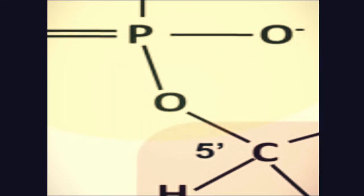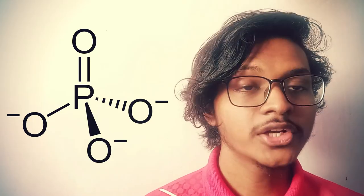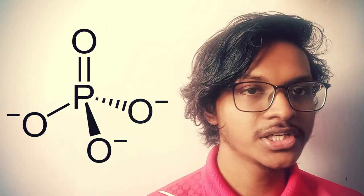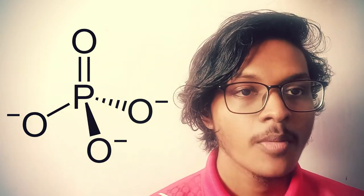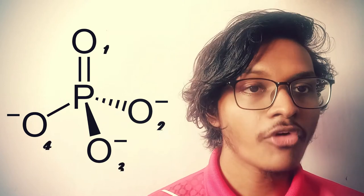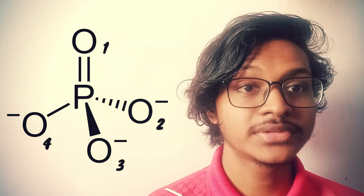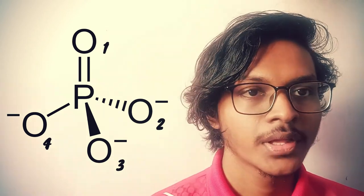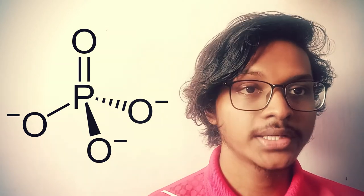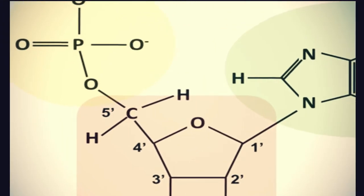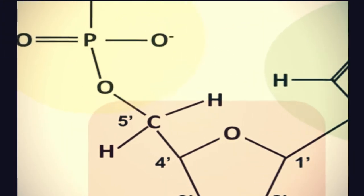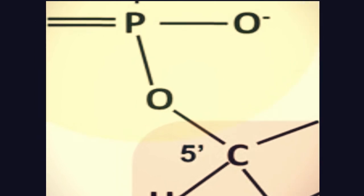The carbon number 5 in ribose sugar is attached to a phosphate group. The phosphate group is a functional group characterized by a phosphorus atom bonded to four oxygen atoms, consisting of three single bonds and one double bond. One of these oxygen atoms is the one attached to carbon number 5 of the ribose sugar.